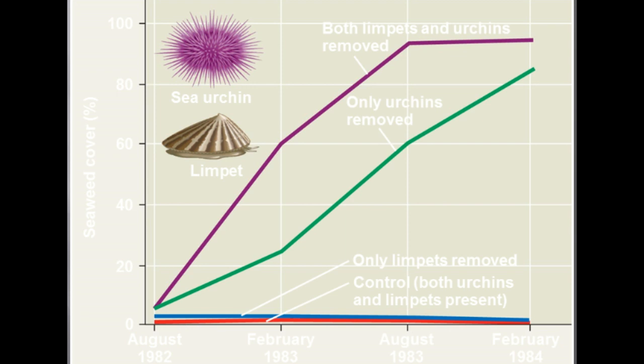Species transplants can disrupt the communities or ecosystems to which they have been introduced. For example, take a look at this graph of urchin feeding and seaweed population. Does removing sea urchins limit seaweed distribution? Not by themselves — but when coupled with removing limpets, you can see the seaweed population start to level off.